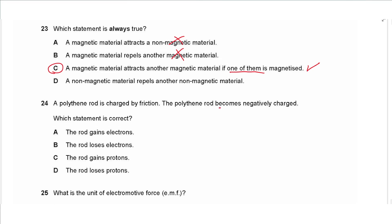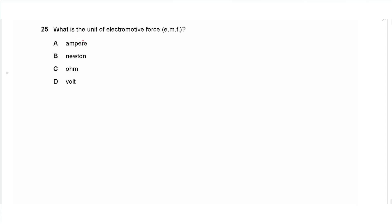Question 24 says a polythene rod is charged by friction. The polythene rod becomes negatively charged. Which statement is correct? So we only gain or lose electrons, so C and D are rejected. And becoming negative that means we gain electrons, not lose electrons. So we choose A.